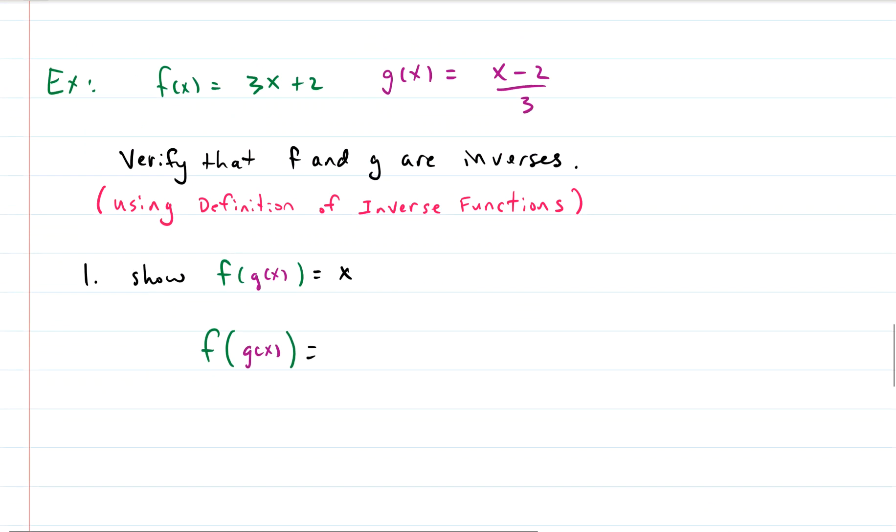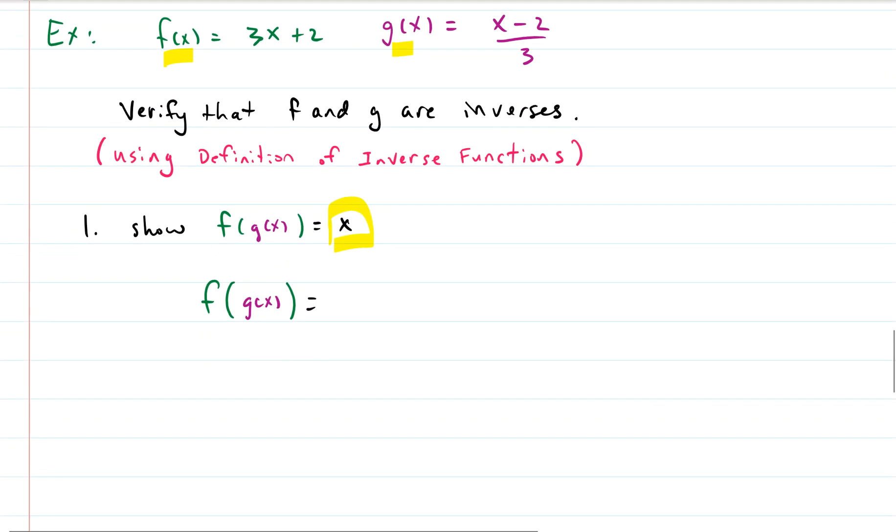So let's do a little example where we show whether or not two functions are inverses. So you may recognize these functions F and G, but we're going to verify that these are indeed inverses of each other using the definition of inverse functions. So again the definition says that we need to perform both F of G and G of F and the result has to be X. So this is what we're hoping for.